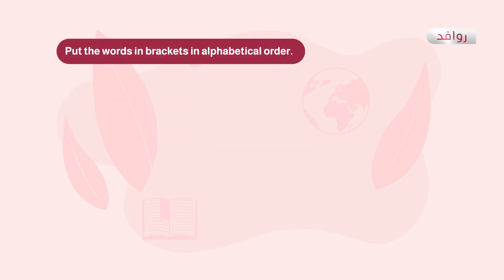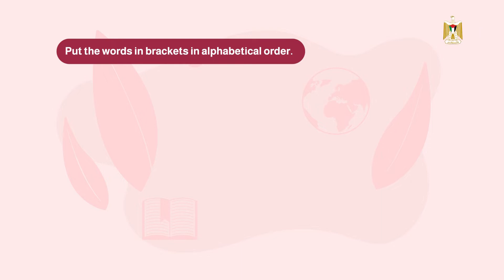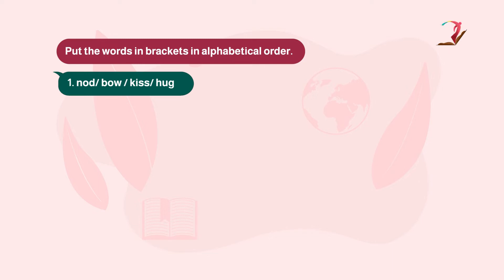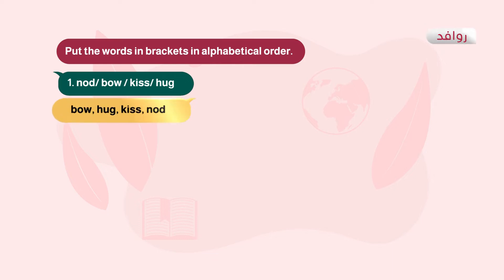We have the following words. Look at the first letter of each word. The first is B, then H, then K, and finally N. So the correct order is: Bow, Hug, Kiss, and Nod.